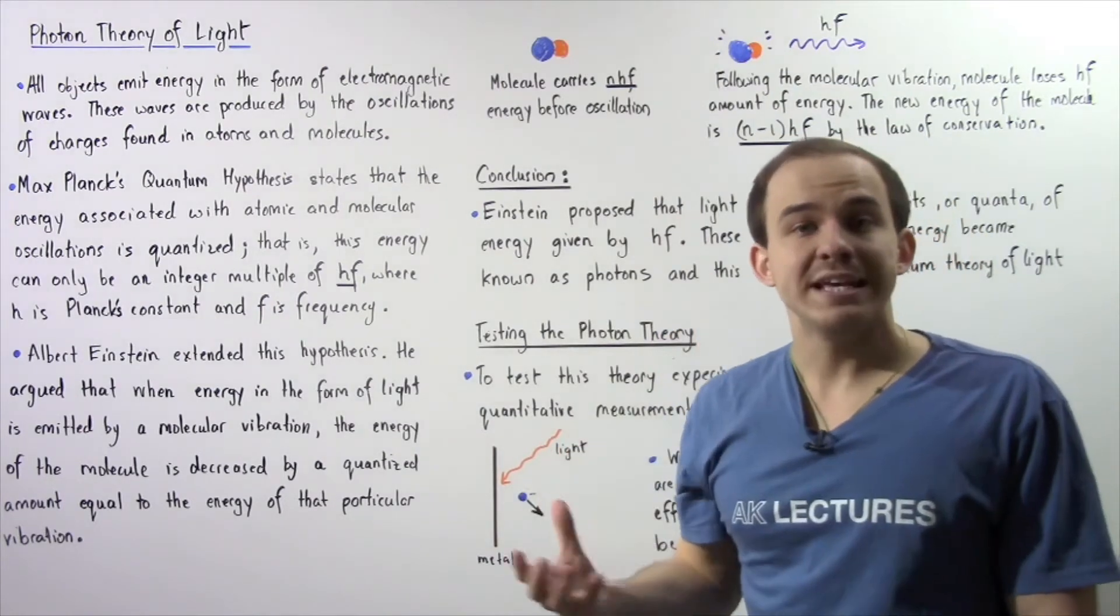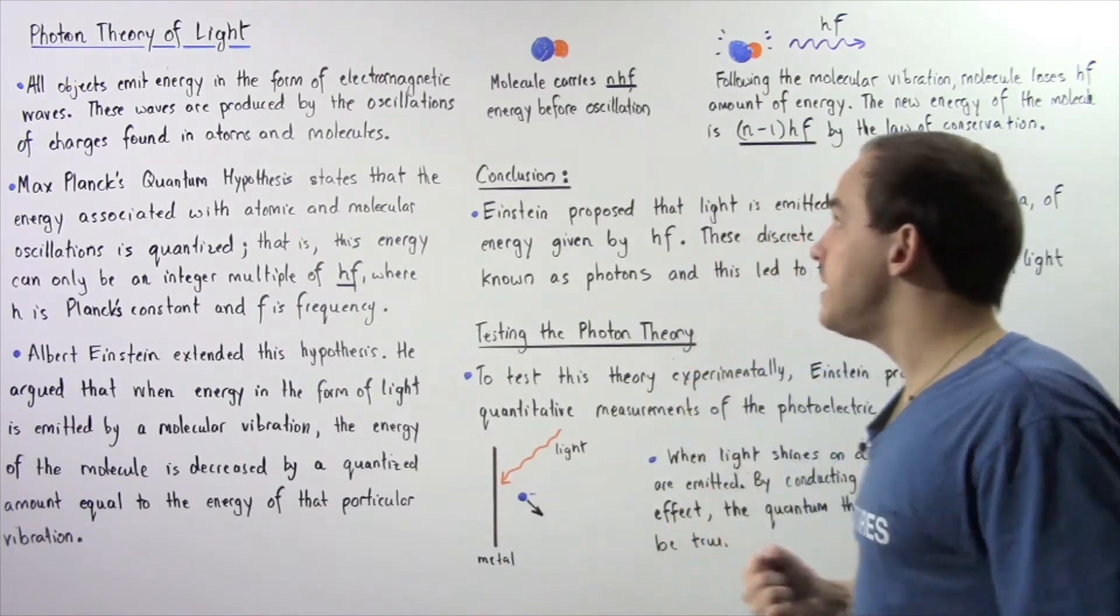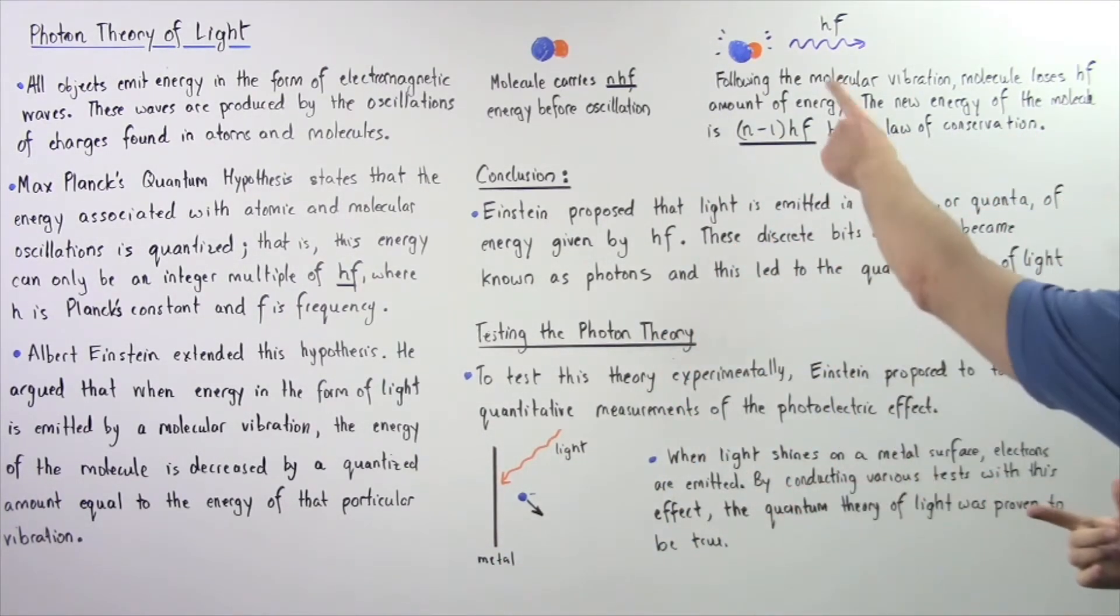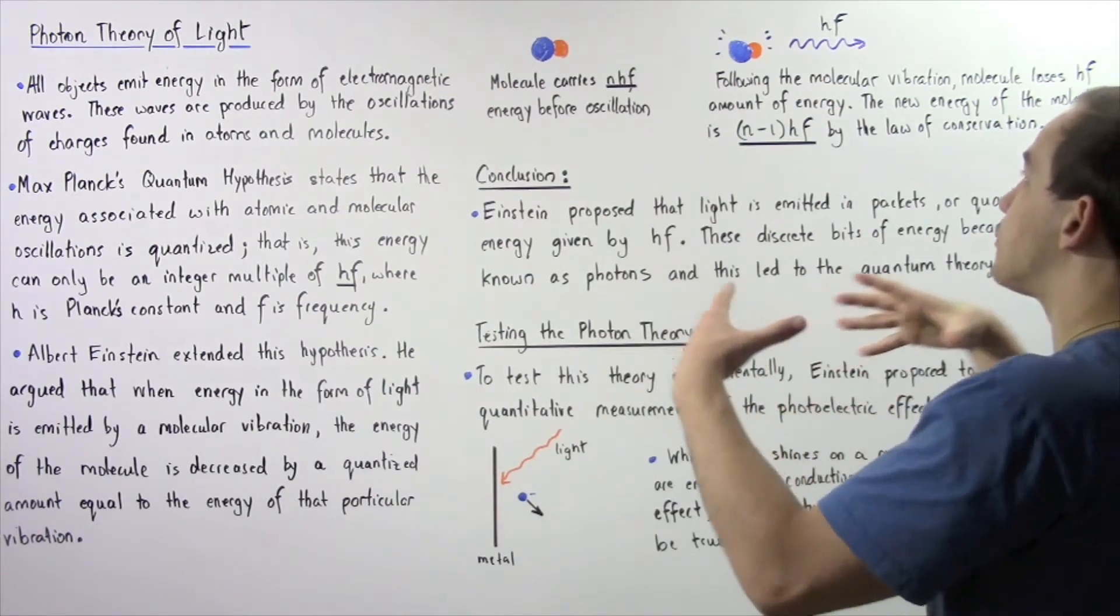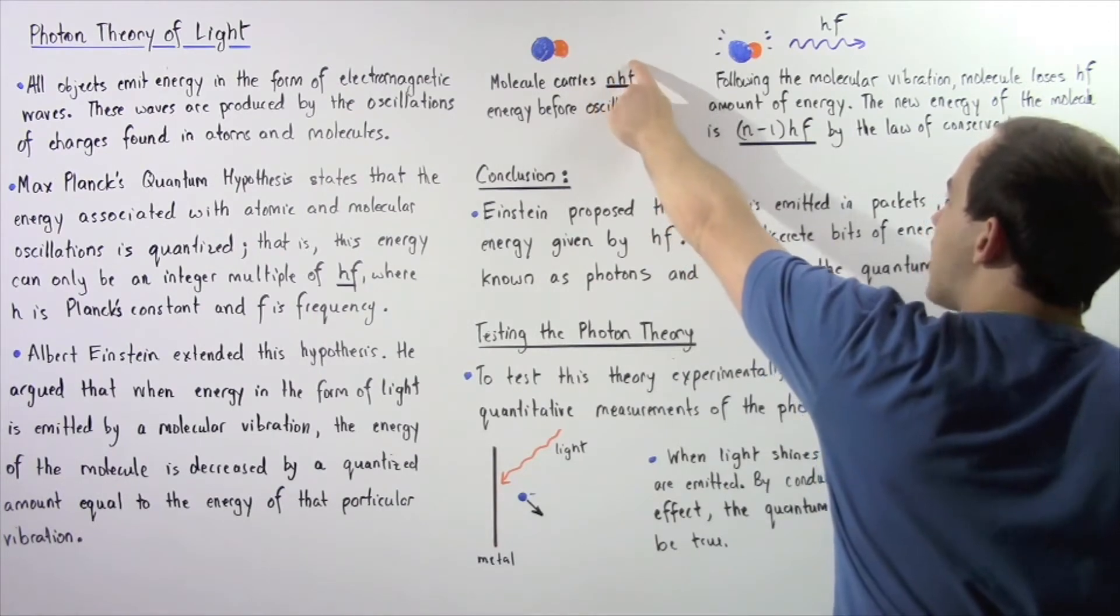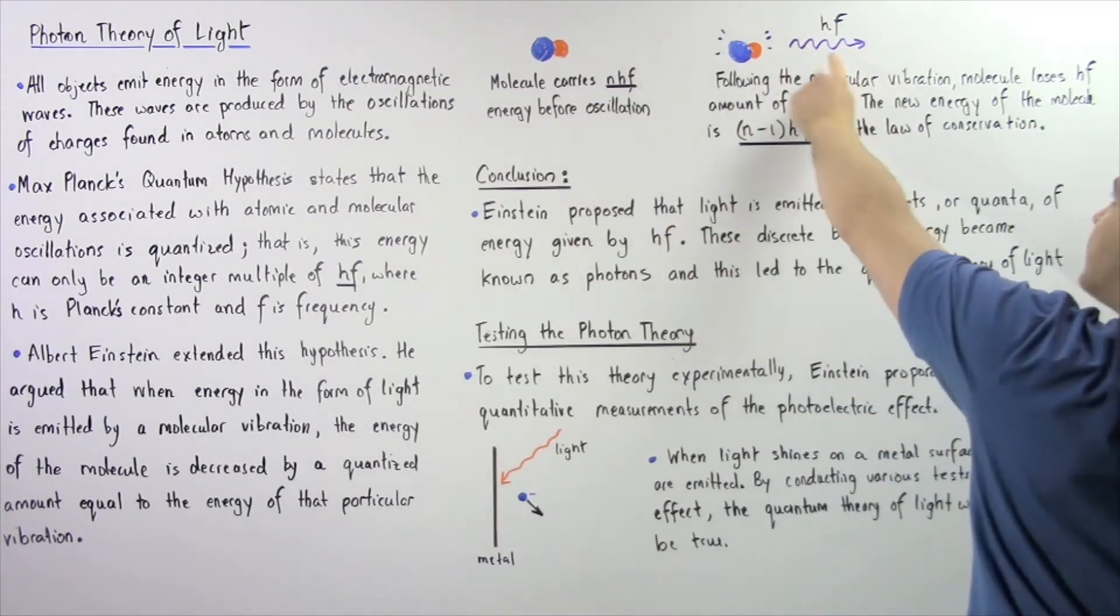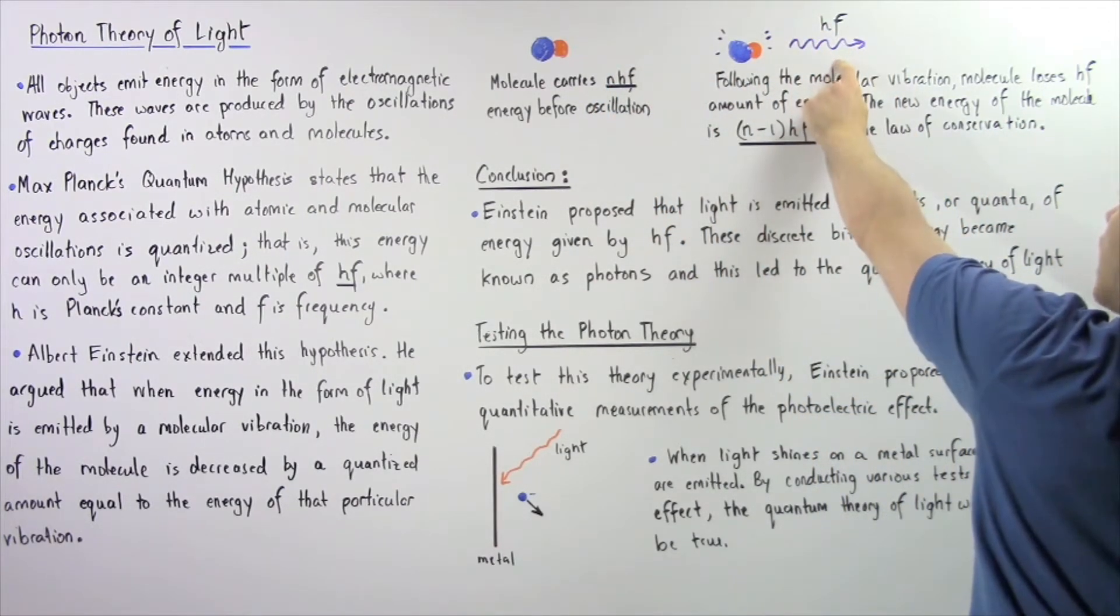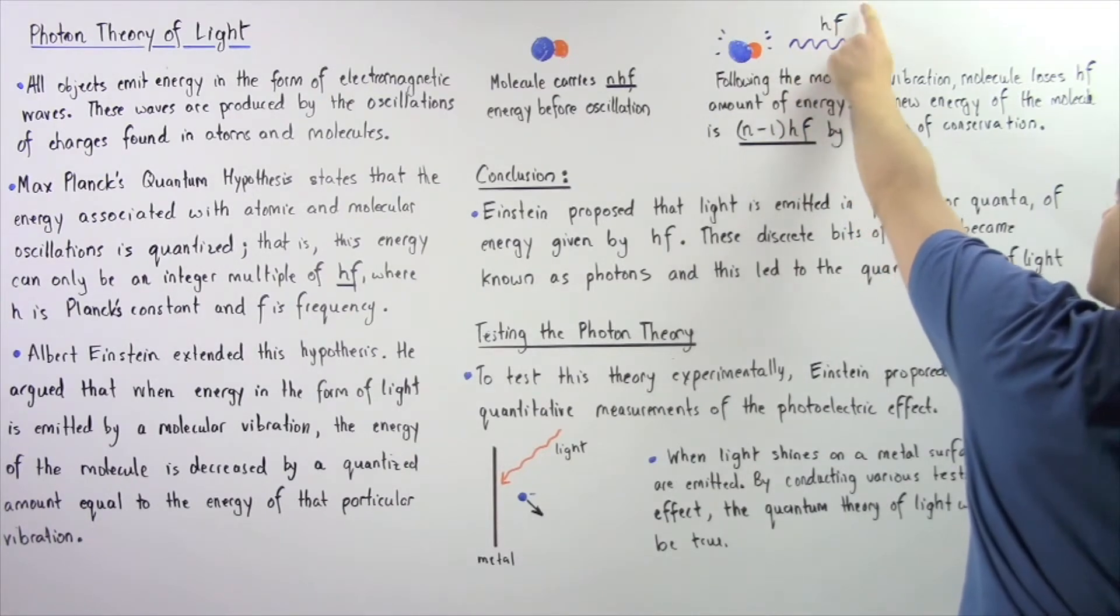If the initial energy of our molecule was n times h times f, and because energy is conserved, that means the final energy of the system of the molecule after that oscillation is equal to n times h times f minus the energy it lost in the form of emitted light, h times f.